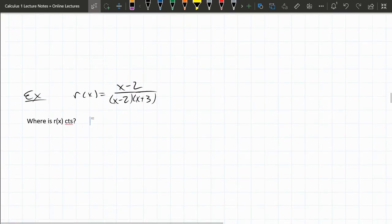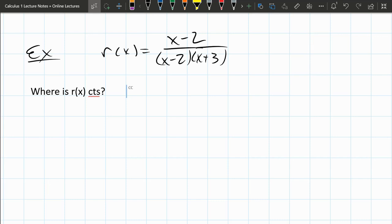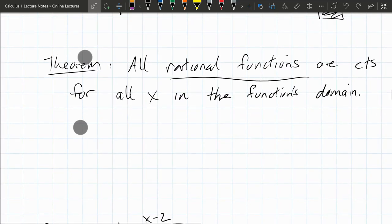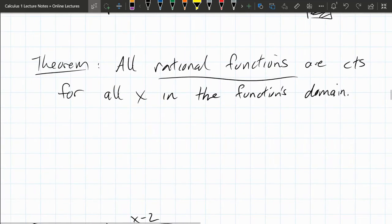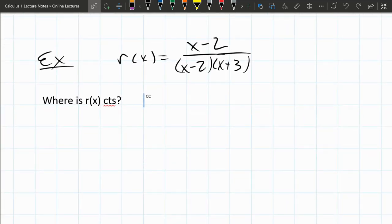So here is our example function. Where is r(x) continuous? Using that theorem, it's continuous for all x in the function's domain. And this is for rational functions, so we just have to figure it out. I can either figure out what x values are in the domain, or it's easier to figure out the bad x values which are not in the domain.